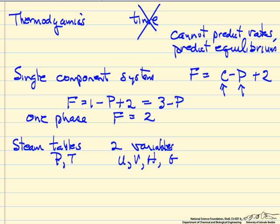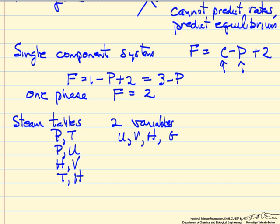But there can be any two variables. So if you know the pressure and the internal energy, or you know the enthalpy and the volume, or the temperature and the enthalpy. If you have two variables fixed, everything else is fixed and it's a unique value in the steam tables.